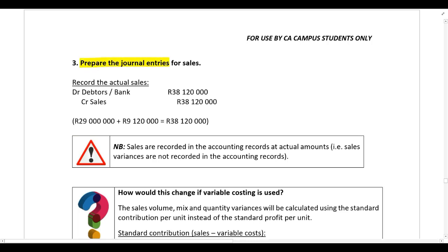Lastly, prepare the journal entries for sales. Remember, we always record sales in the accounting records at their actual amounts; sales variances are not recorded. Debit either debtors or bank, and credit sales with the actual sales amount. This information comes directly from the question — the actual sales amounts for Product X and Product Y. Just record the actual sales; do not record the sales variances.